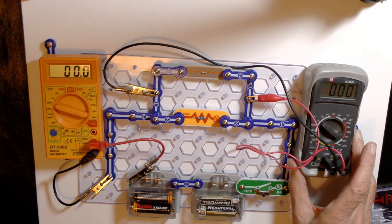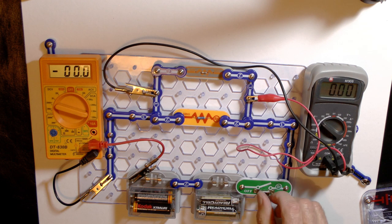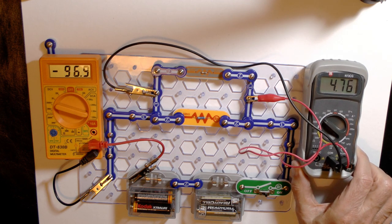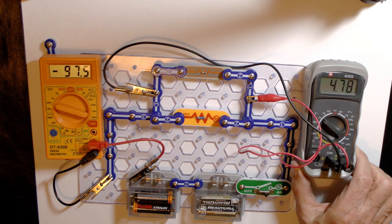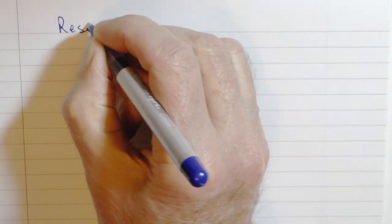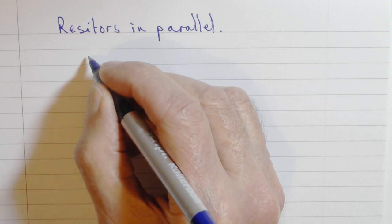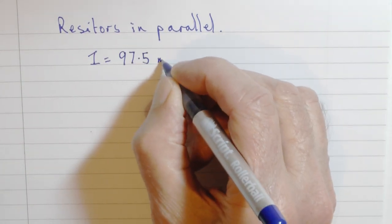So pulling the voltmeter in so we can see it, we'll switch the circuit on and take the readings as before, letting it settle down 97.5 milliamps and 4.78 volts. We immediately see from these results that with the resistors in parallel, the current is almost twice as high as it was before.